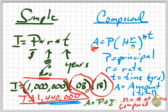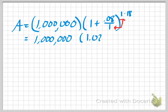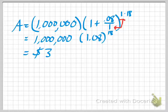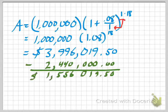Let's take the same example: $1 million at 8% interest for 18 years. Using A = P(1 + R/N)^(NT), if we're compounding annually then N equals 1, which basically drops out. So it's 1,000,000 times 1.08 to the 18th power. Putting that into a calculator, the total balance at the end of 18 years is $3,996,019.50. Subtracting the $2,440,000 we got with simple interest, the difference is $1,556,019.50 — a huge difference just from changing the method of computing interest.